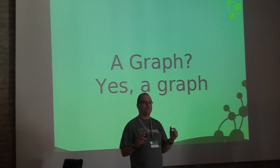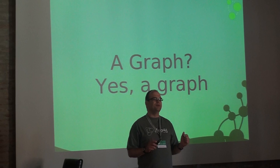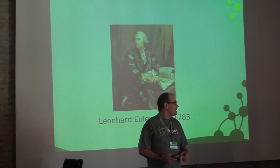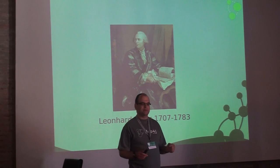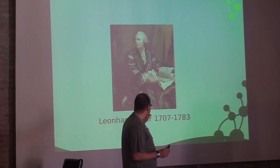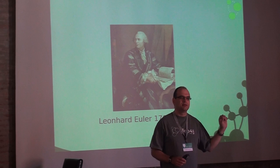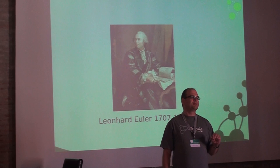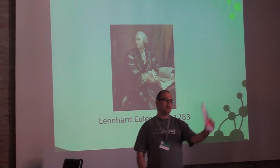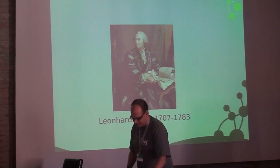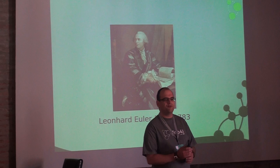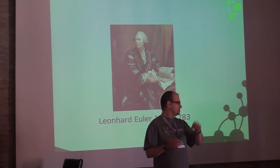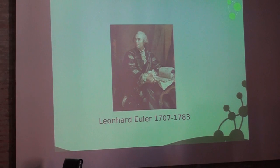Who invented graphs? Meet Leonhard Euler — he is to us what Shakespeare is to English literature, basically there to annoy students. The first graph problem in the world: the Seven Bridges of Königsberg, which was part of Prussia at that time. The question was: starting somewhere in the city and crossing each bridge exactly once, is it possible to return to the same place? Many people in Königsberg tried this empirically, just walking through the city for years. Euler abstracted the problem and found it was essentially a graph.